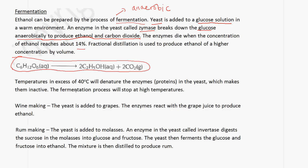Temperatures in excess of 40 degrees will denature the enzymes in the yeast — you need to be familiar with the term 'denature'; don't say it will kill the enzymes, it denatures the enzymes. Fermentation will stop at high temperatures. In the case of winemaking, yeast is added to grapes and the enzymes react with the grape juice to produce ethanol. In the case of rum making, yeast is added to molasses; an enzyme called invertase digests the sucrose in the molasses into glucose and fructose, the yeast ferments these into ethanol, and the mixture is then distilled to produce rum.